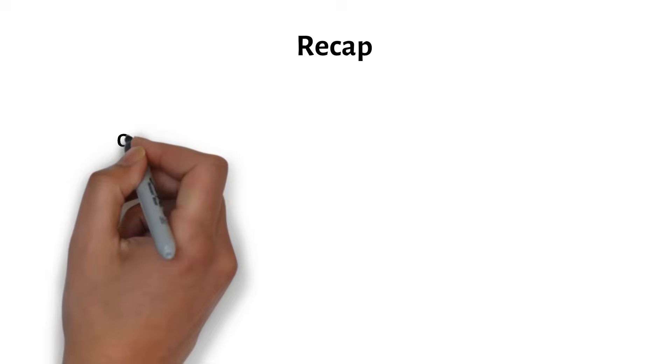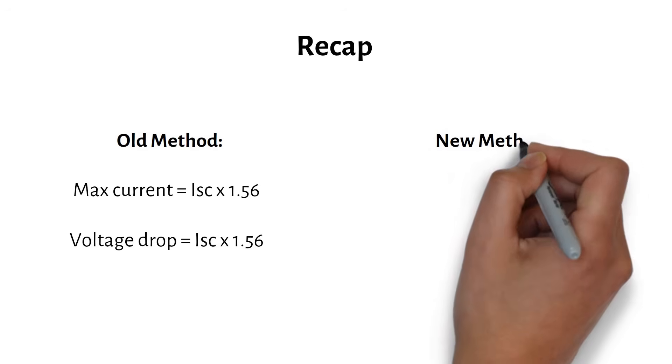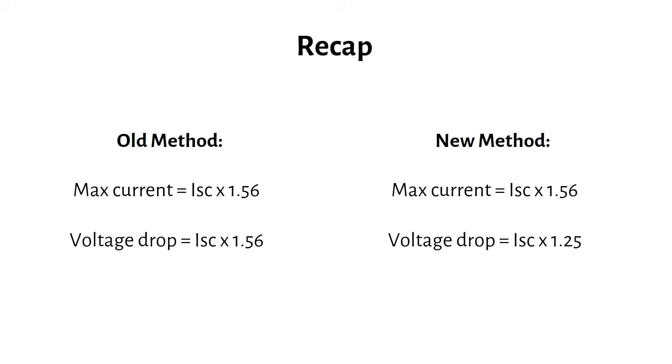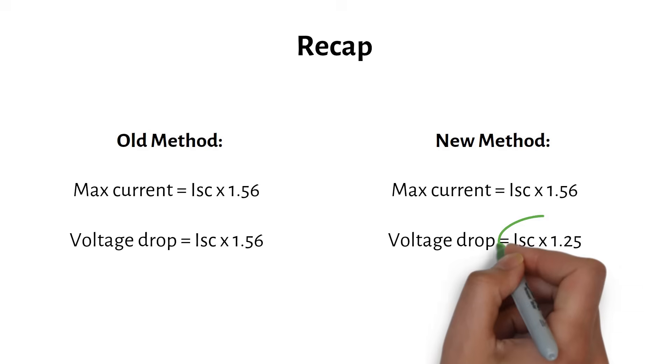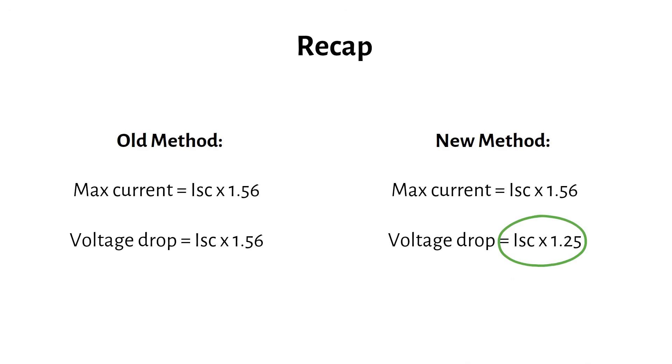So to wrap it up, my old method used the short circuit current times 1.56 for both the max current and voltage drop calculation. And the new method still uses 1.56 for the maximum current, but now I'm using 1.25 for the voltage drop. This often results in smaller PV wire and extra savings while still being safe. Sorry for giving you the wrong information, but I believe this correction was needed.